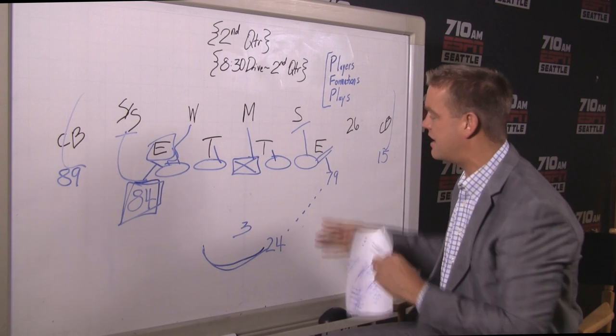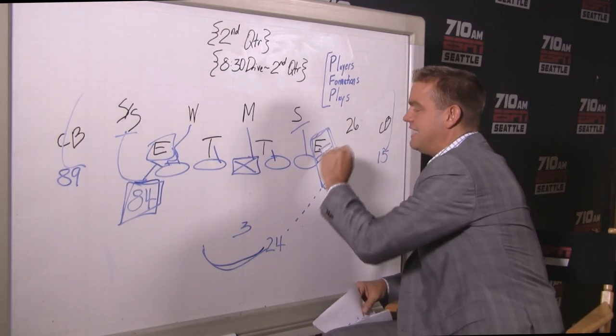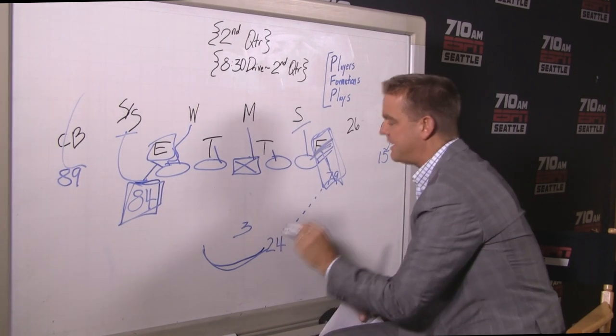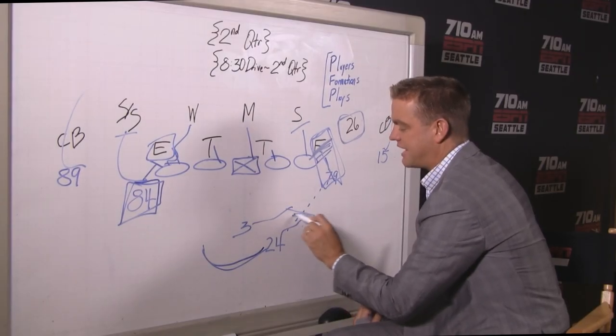All those details on that block—this is a critical block. When he wins here, it becomes a two-on-one, putting Antrel Rolle in a very difficult position. Everybody else has good angles, Gilliam does his job, and then you see these two do their magic.